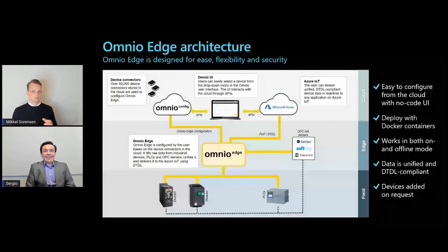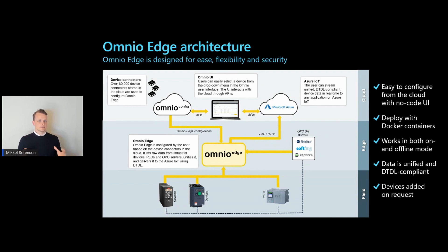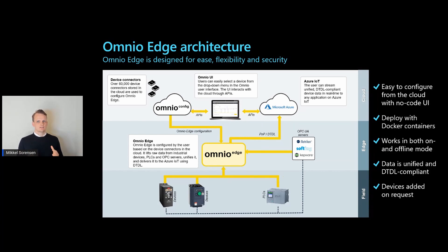That was an awesome demo. Let's work through the solution reference architecture. What happens if a device is not in your catalog or is not supported? The architecture is very simple by design. Say we have a typical site with devices, PLCs, and OPC UA servers, and you want to get unified data from those assets into Azure IoT using Azure IoT Plug and Play. Omnio Edge is at the center of it all, but it only works with configuration like you saw in the demo. For that we have the Omnio Cloud that runs in Azure, containing all our device connectors and API service, allowing users to create configuration either in our UI or by building their own.